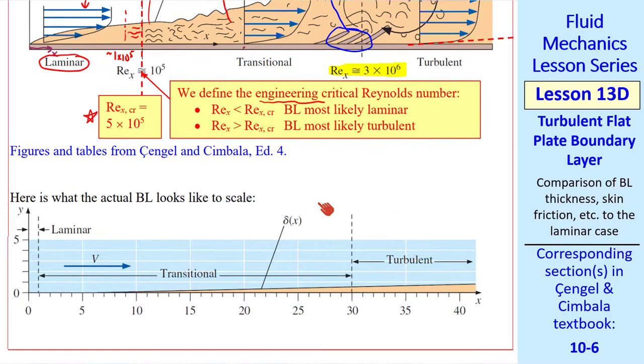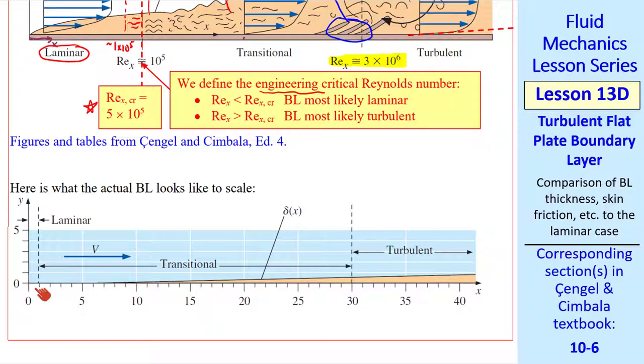I plotted the actual boundary layer to scale, where the x and y axes are the same. On this scale you can't even see the laminar boundary layer, which is in this tiny portion. Transition actually extends for a long time, and then the flow is fully turbulent. I adjusted these numbers so that 30 on this x scale is the same as a Reynolds number of 3 million. Our approximation that the boundary layer is very thin compared to plate length is reasonable even for the turbulent flow.